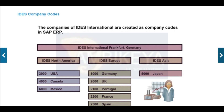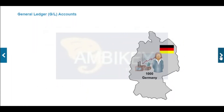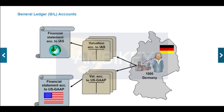Consolidated financial statements of the group will be created by companies in a subsequent step, and companies are used as a basis for consolidation functions. Many companies not only have to create reports according to one specific accounting principle, but also need to meet different information requirements, such as country-specific requirements and corporate group standards. This means financial statements have to be created according to local accounting standards like U.S. Generally Accepted Accounting Principles (GAAP), the German Commercial Code HGB, and the International Financial Reporting Standards (IFRS).